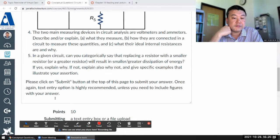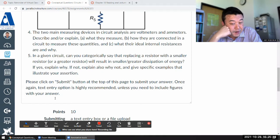Question four: two main measuring devices, voltmeter and ammeter. Describe and explain what they measure, how they are connected in a circuit to measure.